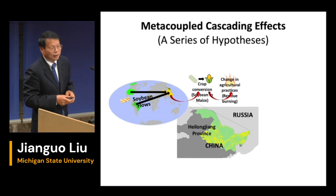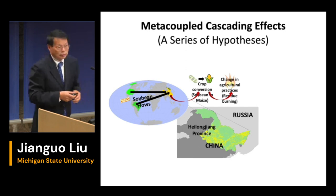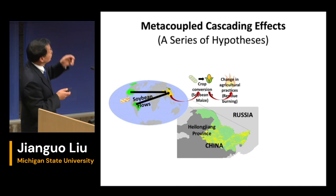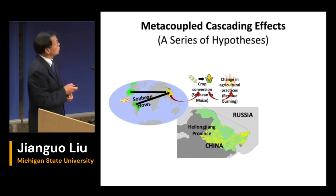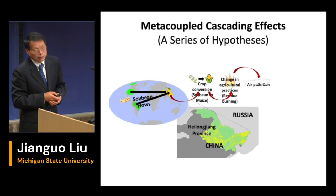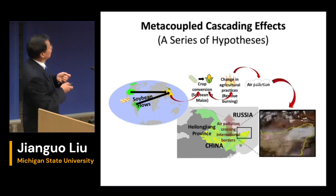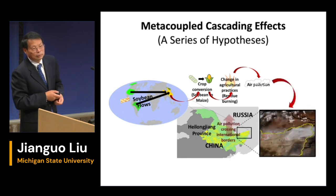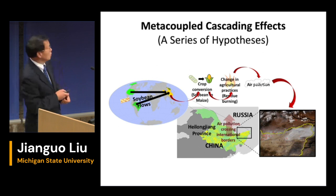Because corn or maize has a large amount of stems or stalks, farmers burn this residue to prepare for next year's production. Soybean has a small amount of residue that can simply be put back into the soil. But corn residue has to be burned, and this burning produces air pollution.